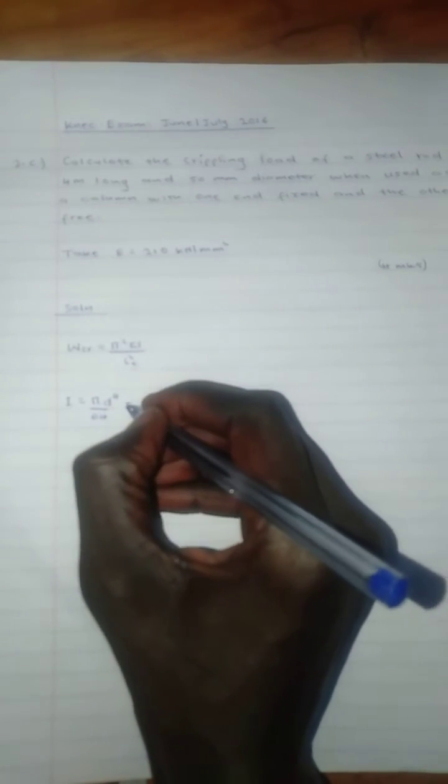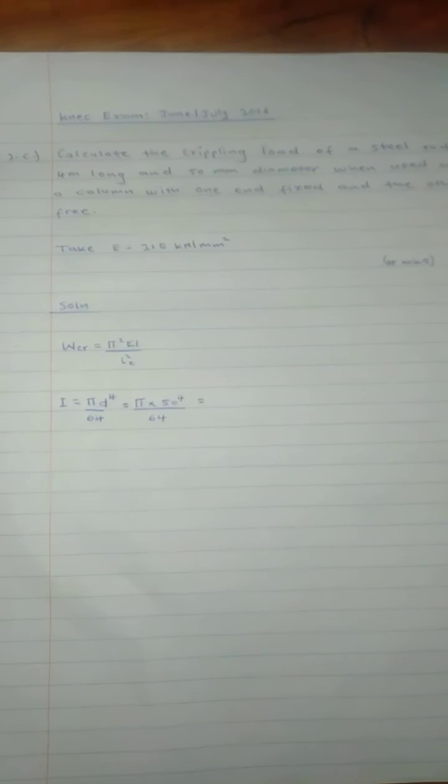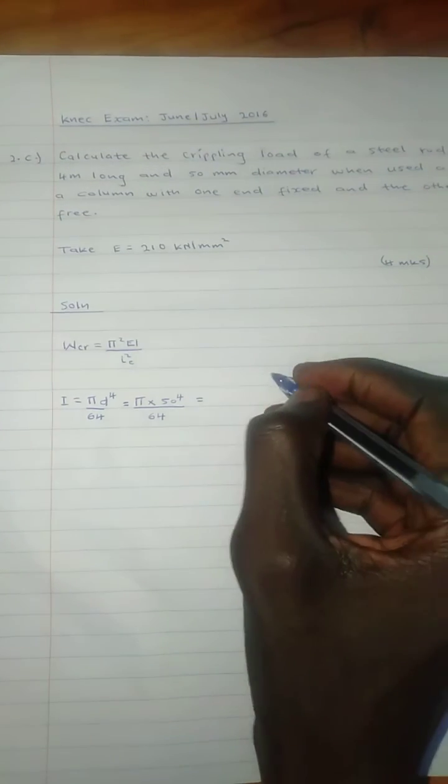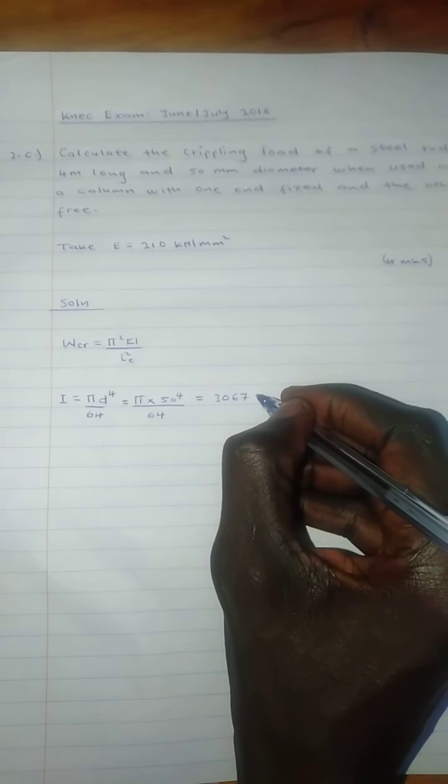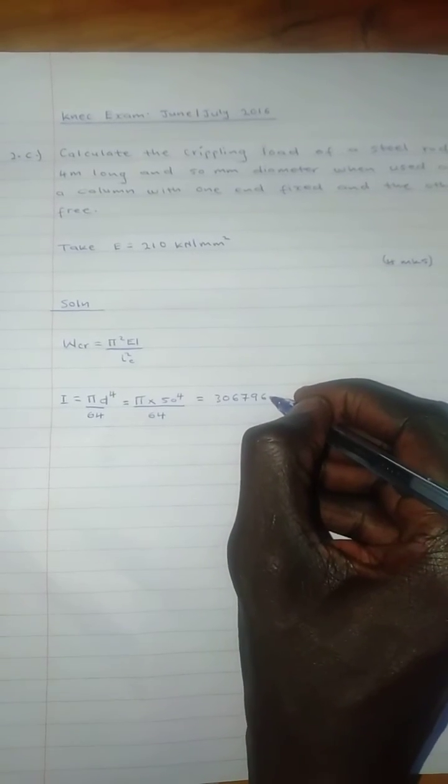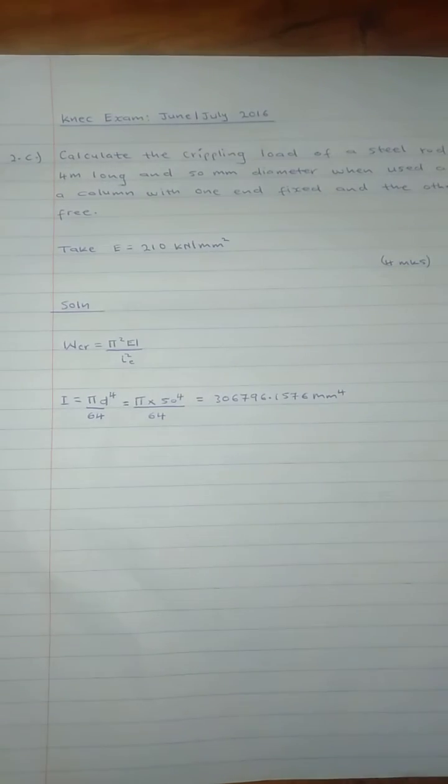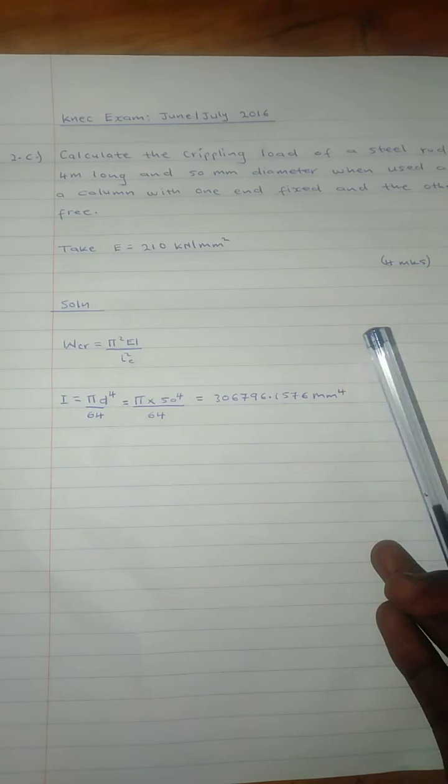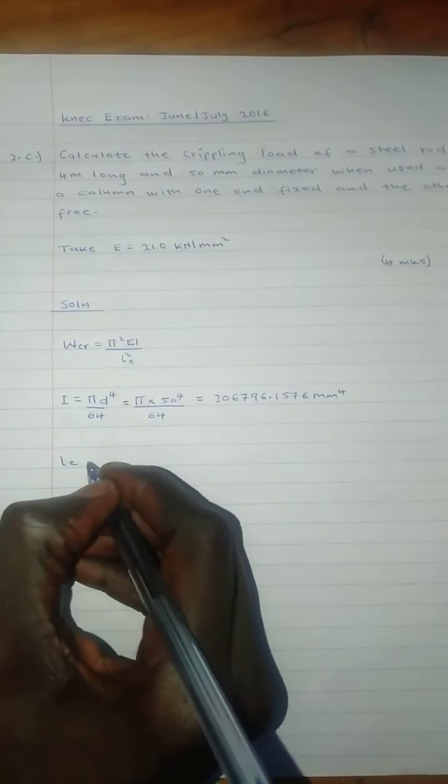That is the formula. Punching that into the calculator, we'll get 306.796 millimeters to the fourth. That is our inertia when you punch it into the calculator.